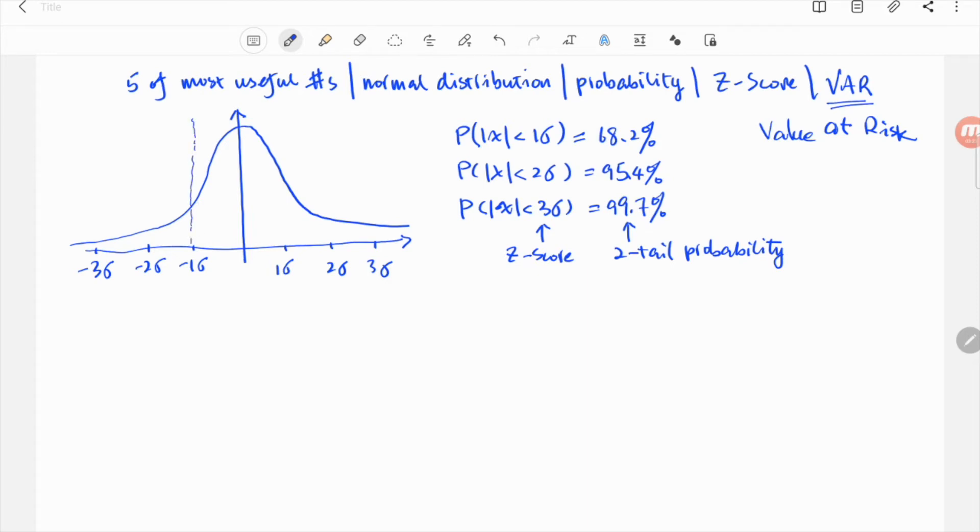With these numbers, you can derive those one-tail probabilities, of course. For example, the probability you lose more than 1 sigma would be 15.9%. The probability you lose more than 2 sigma would be 2.3%, while losing more than 3 sigma would be only 0.13%.